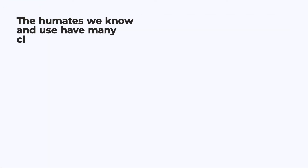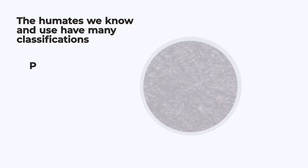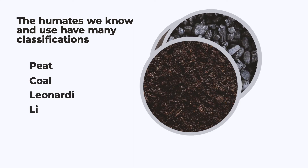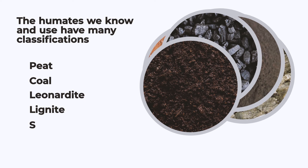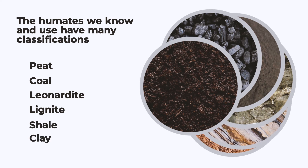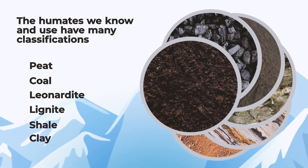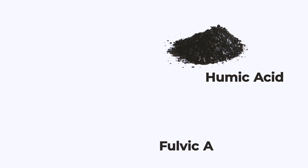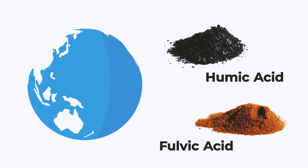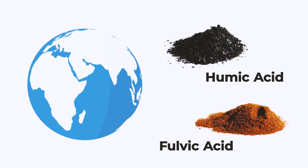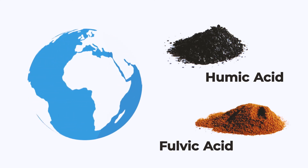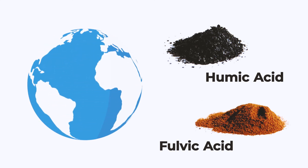Virtually any element or mineral we mine today was created millions of years ago during the formation of our Earth. The humates we know and use have many classifications, such as peat, coal, leonardite, lignite, some types of shale and clay deposits, as well as exudate from the Himalayan mountain range. These humate substances are all millions of years old, and all have different characteristics depending upon where they originate and how old they are.